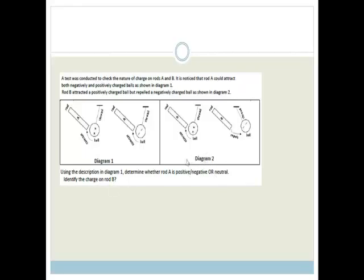So let's use rod B first, because it's pretty easy. If it's repelling the negative ball and attracting a positive ball, it's obvious that the charge on rod B is negative. So, it is negative.